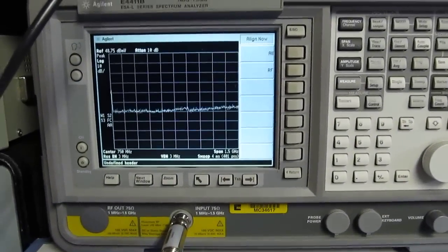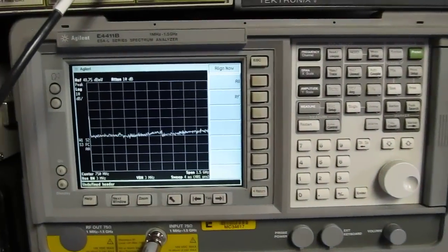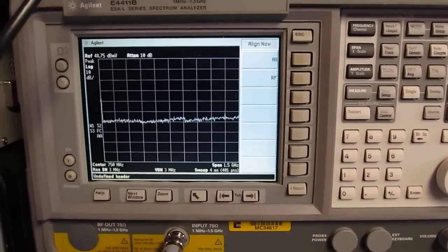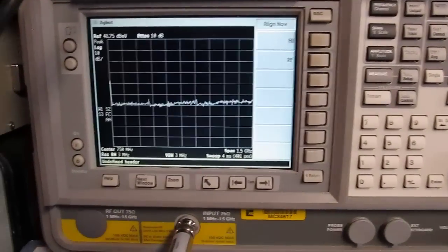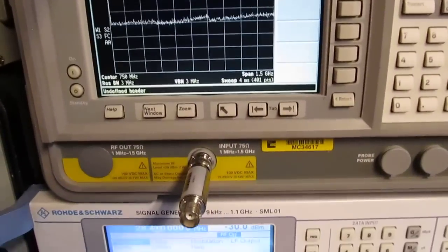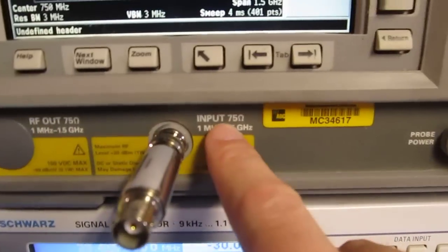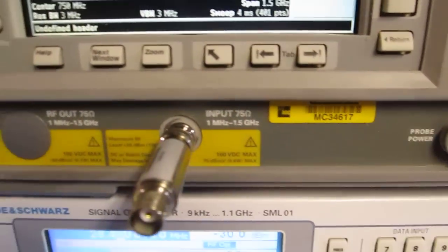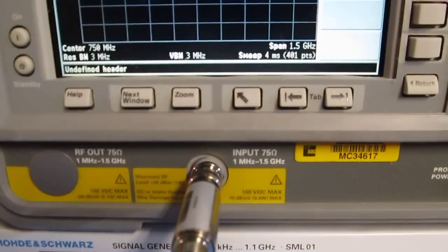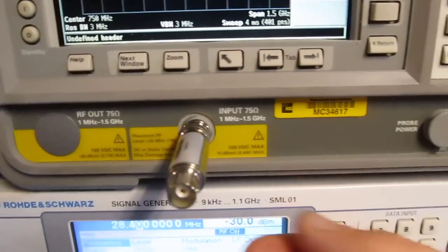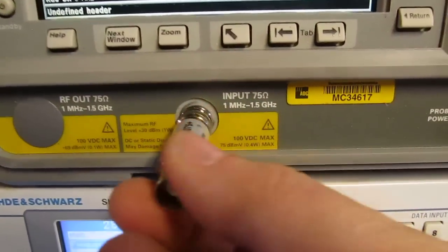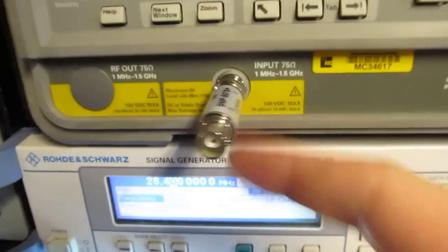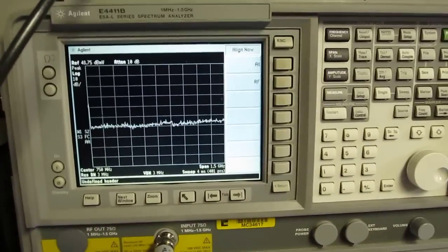And then down here, this is an Agilent E4411B spectrum analyzer. It goes to one and a half gigahertz, a nice little analyzer, kind of basic, similar to the Advantest. This one does not have the tracking generator though, but it's also a little bit unusual. It's got the 75 ohm input option, and that's probably the reason I got it cheap, because I would have rather had the 50 ohm input. So I just have a little 50 ohm to 75 ohm matching pad on it. It adds a little bit of loss, but it still makes it very usable.